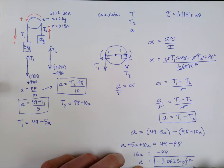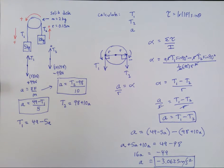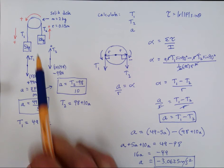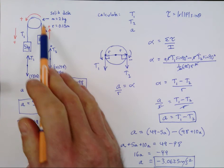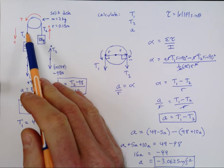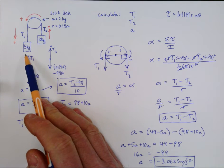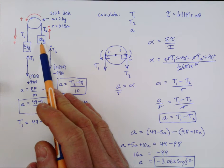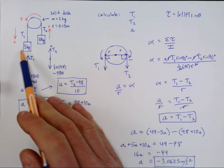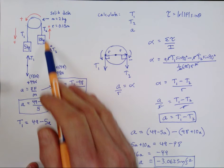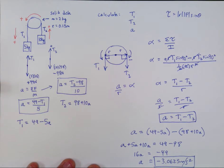The negative sign makes sense. Down on the left side is the positive direction, but with a 10 kg mass on the right, the system actually accelerates that way — in the negative direction. So the negative sign confirms we have the right answer.